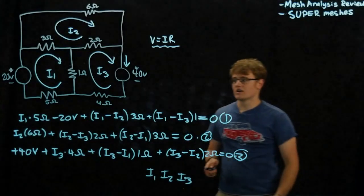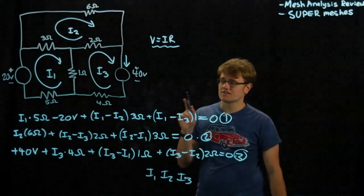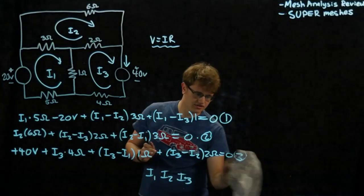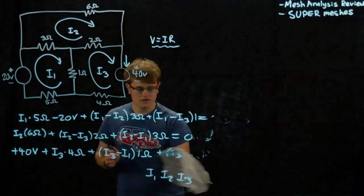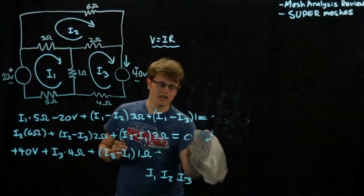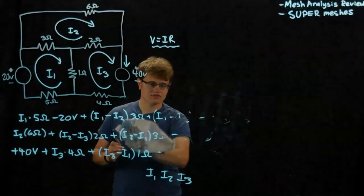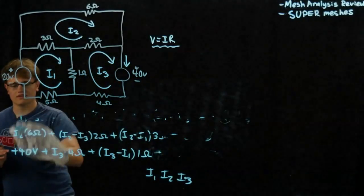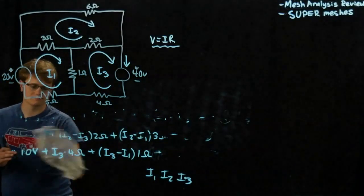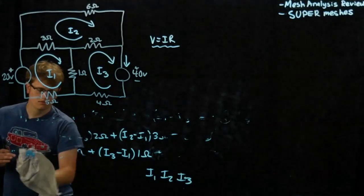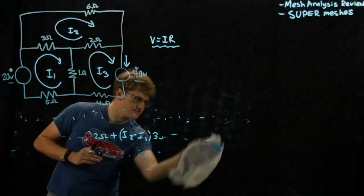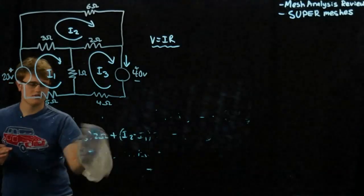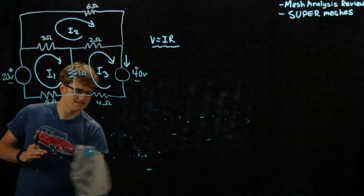Now we're going to change it up and do a super mesh. What is the difference between a regular mesh and a super mesh? A super mesh will have a constant current source. We're going to take our original circuit, put a current source in there, and see how it changes things.